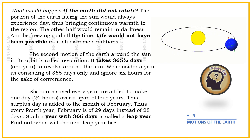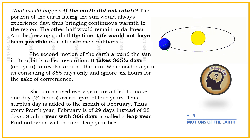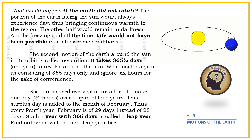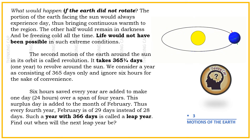The second motion of the Earth around the Sun in its orbit is called revolution. It takes 365 and a quarter days, i.e., 1 year, to revolve around the Sun. We consider a year as consisting of 365 days only and ignore 6 hours for the sake of convenience. The 6 hours saved every year are added to make 1 day, that is 24 hours, over a span of 4 years.